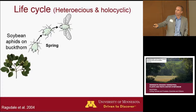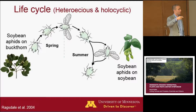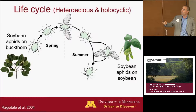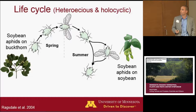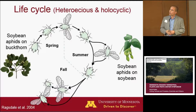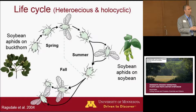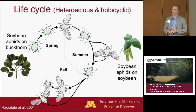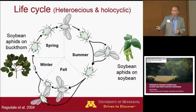After a few generations on buckthorn, they'll develop the winged generation that leaves the buckthorn and looks for soybean. If soybean's not available, there's some indication they might go back to buckthorn, hang out a little longer, and then go looking for soybean. On soybean, they're mainly in the non-winged form, going through up to 13 generations just on soybean in a year. However, if plants get too crowded with aphids or the quality starts decreasing, they'll produce winged forms that fly out to look for healthier, less heavily colonized plants within that field or in other fields. Then in the fall, based on temperatures and photoperiod, the aphids develop a winged form again that migrates to buckthorn, where mating occurs — the only time of year when mating occurs — and then the females lay their eggs, which overwinter.